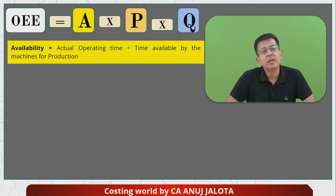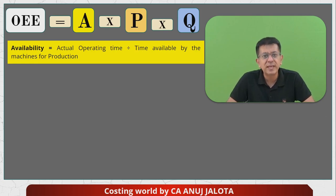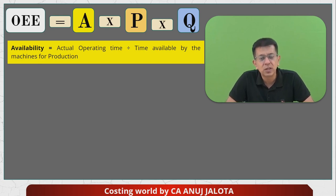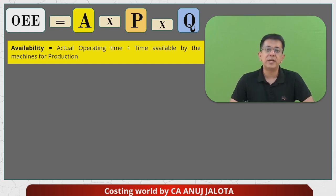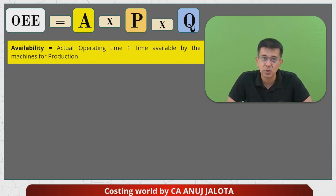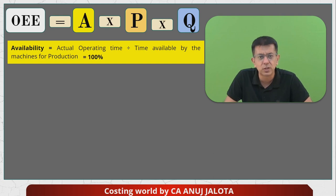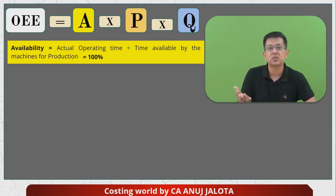For the availability ratio — for example, if out of eight hours that the machines are available, one hour the machines broke down, then the availability ratio would be 7 upon 8. In this question, there was no downtime data given, so this ratio is assumed to be 100%.